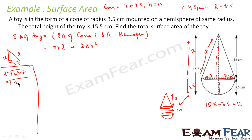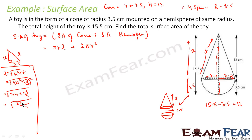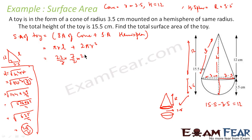Calculating l: l = √(12² + (7/2)²) = √(144 + 49/4) = √(576/4 + 49/4) = √(625/4) = 25/2. So the slant height l = 25/2 cm.